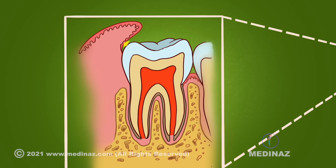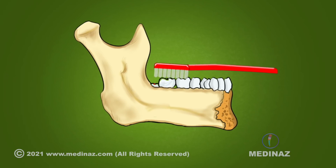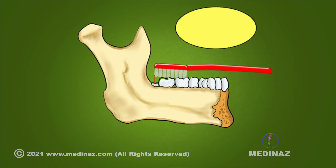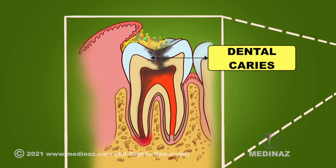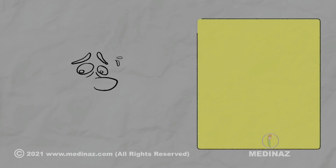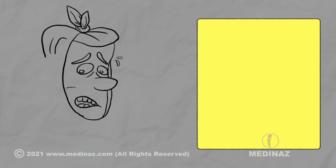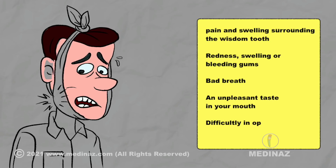The next important cause is dental caries. Usually caries are seen in areas of food accumulation. The wisdom tooth being the last one in the jaw, it is difficult to access and clean. Moreover, if the wisdom tooth is partially erupted, the chances of infection and dental caries will also increase. You may experience pain and swelling surrounding the wisdom tooth, redness, swelling or bleeding gums, bad breath and unpleasant taste in your mouth, and sometimes difficulty in opening your mouth.